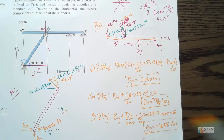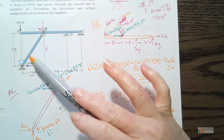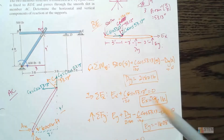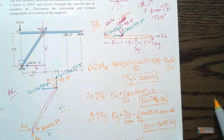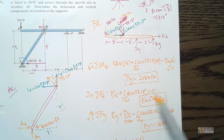And there we go — we found all of the support reactions. That's how you solve a frame problem: split it up, draw the free body diagram for each member, and apply your equilibrium equations. Hope y'all have a good rest of the day — I'll see y'all next time.